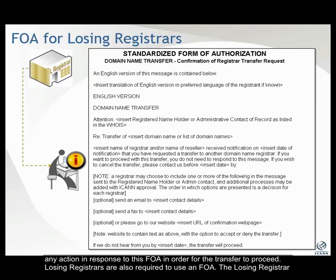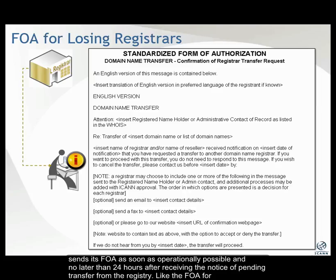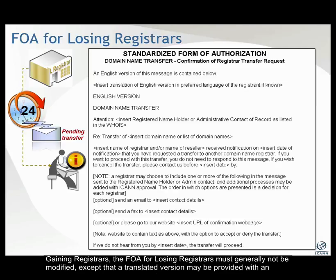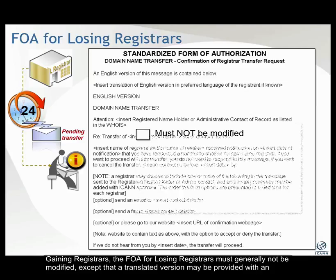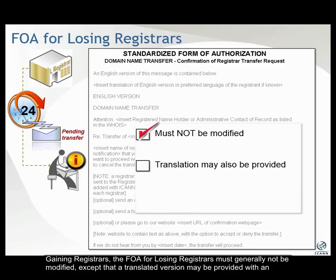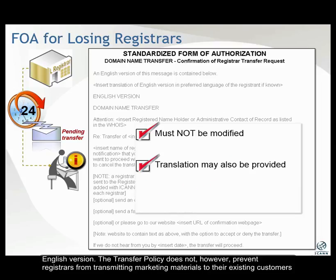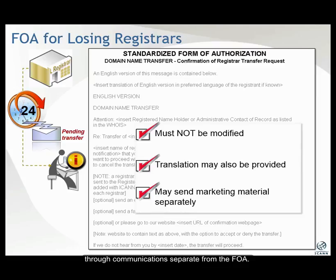The Losing Registrar sends its FOA as soon as operationally possible and no later than 24 hours after receiving the notice of pending transfer from the registry. Like the FOA for Gaining Registrars, the FOA for Losing Registrars must generally not be modified, except that a translated version may be provided with an English version. The transfer policy does not, however, prevent registrars from transmitting marketing materials to their existing customers through communications separate from the FOA.